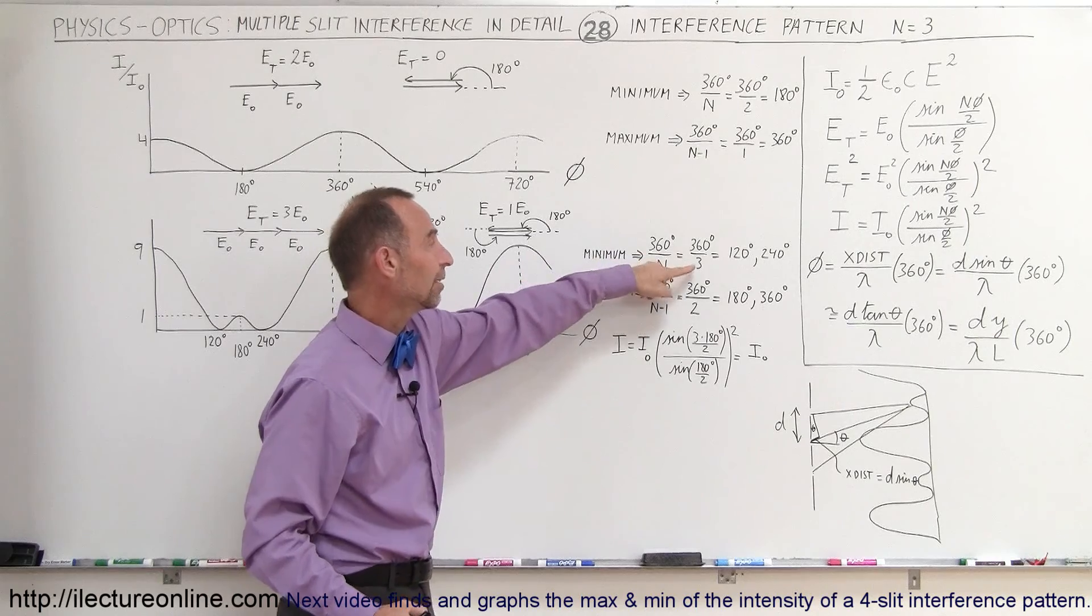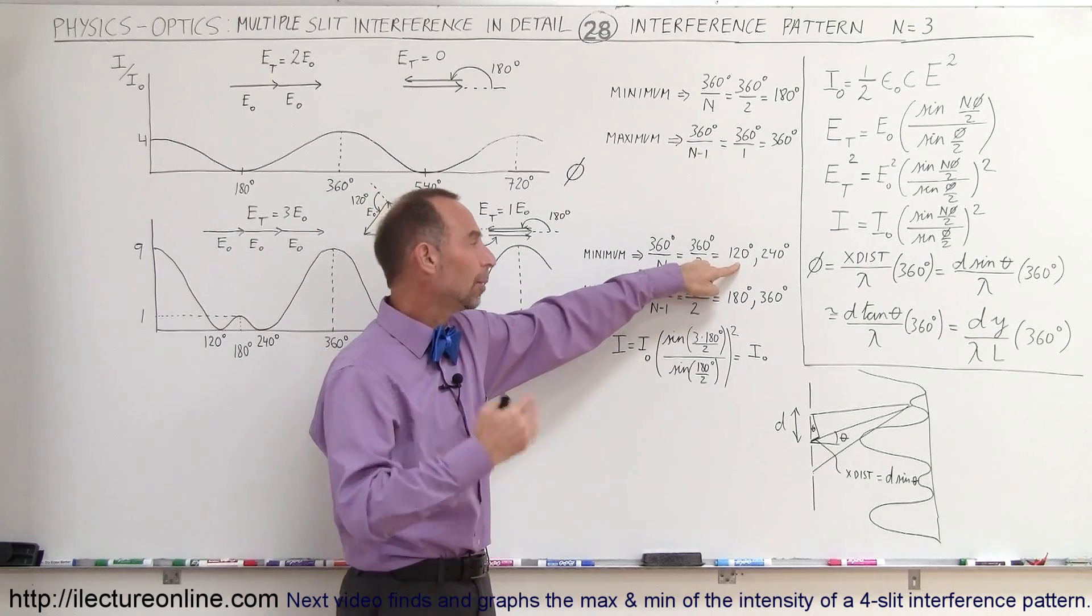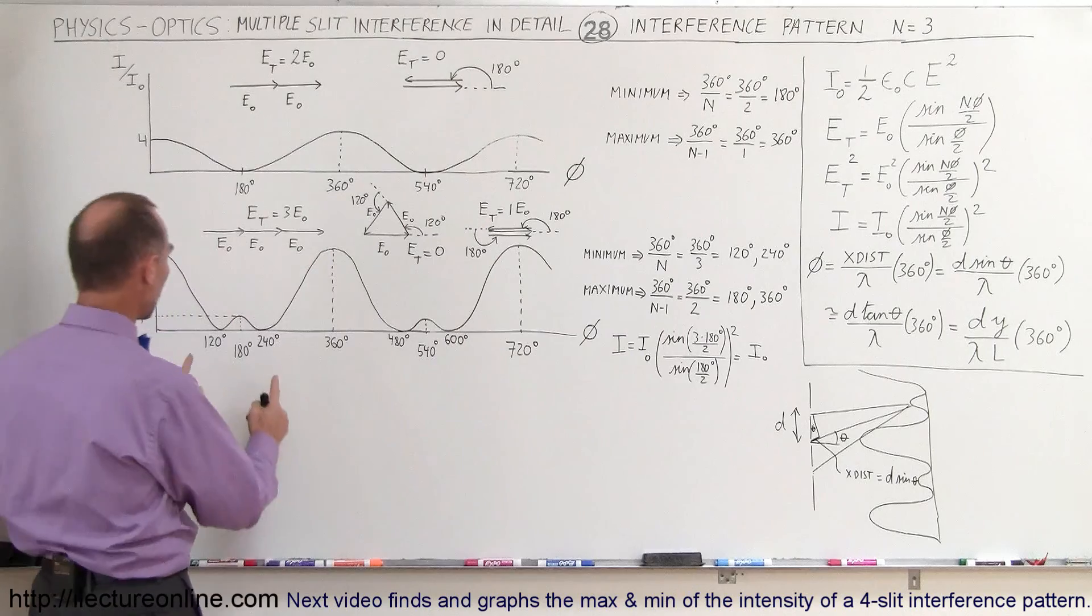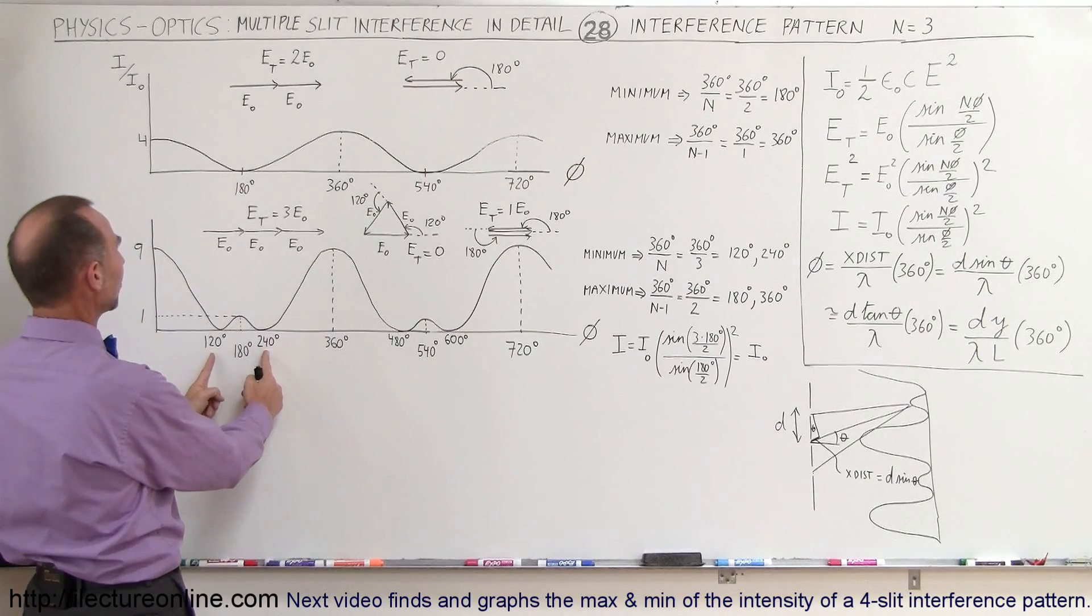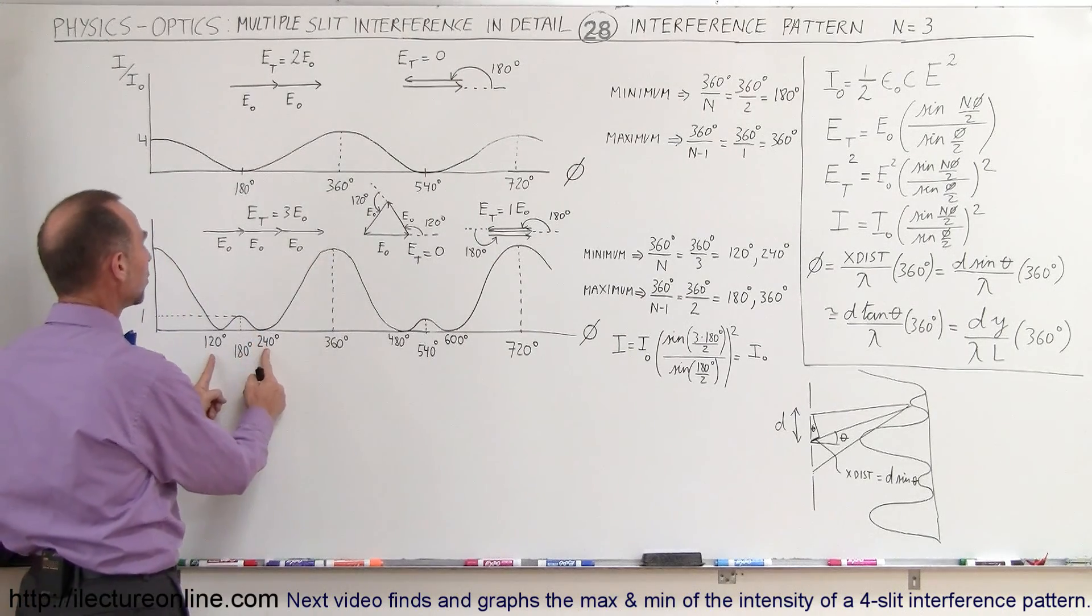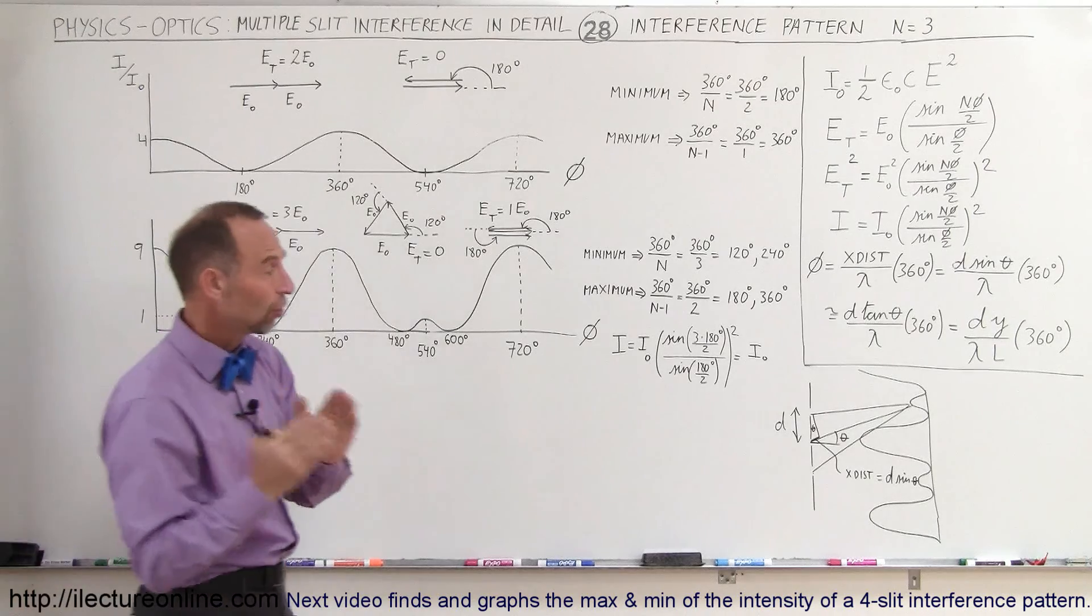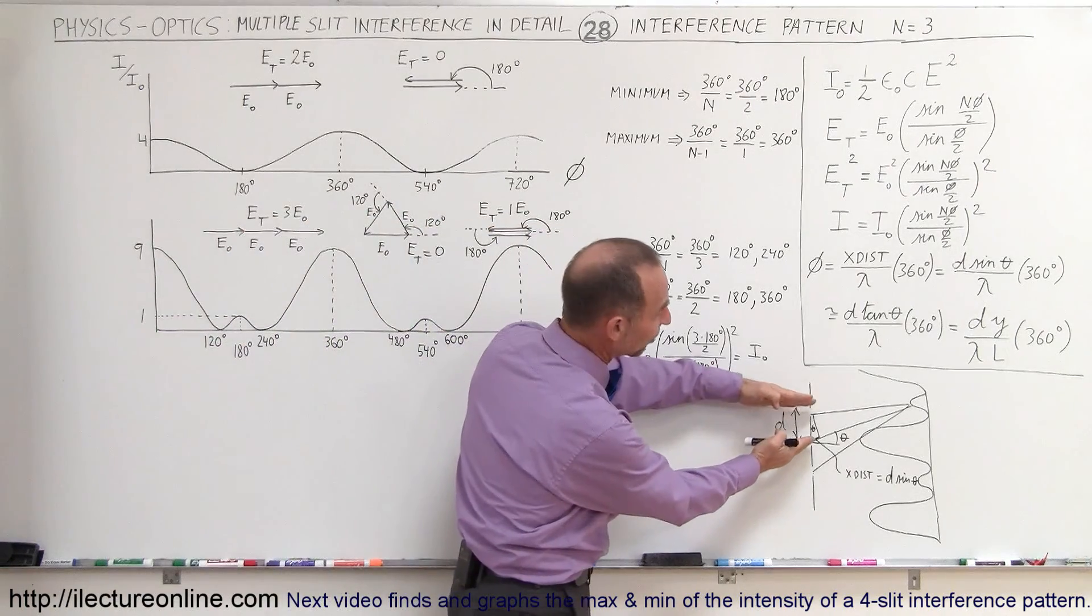So 360 divided by 3 gives you 120. And then if we double that to 240, those will be the two places where we find the minimum. About 120 degrees phase difference and a 240 degree phase difference. And this is associated with two adjacent phasers.